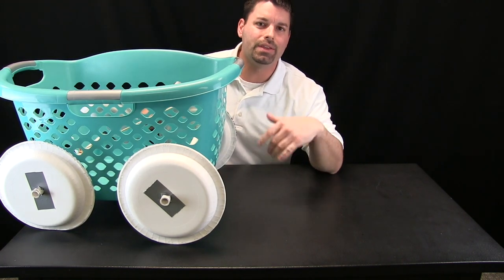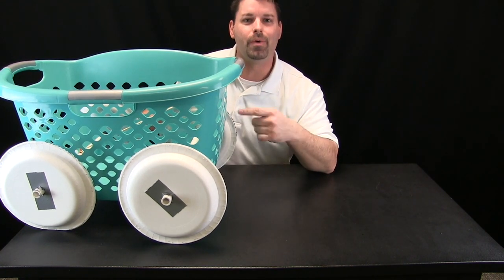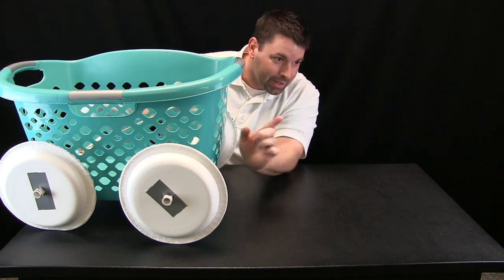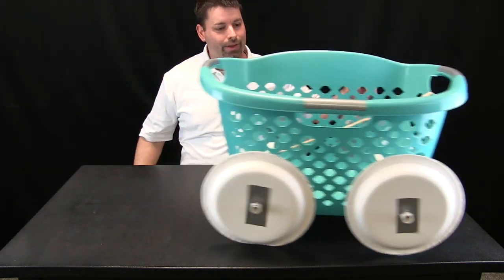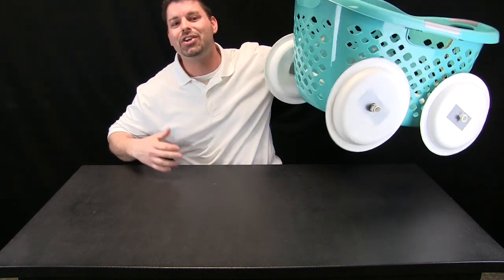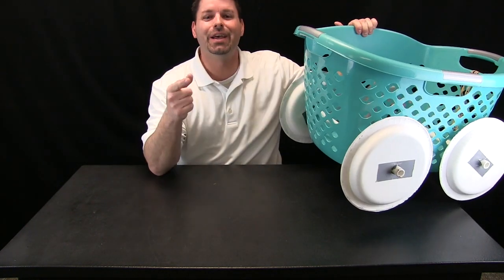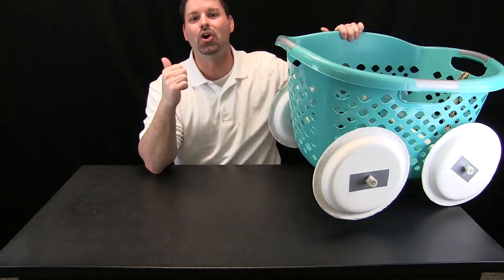So we have tested everything out. The axles seem to spin really well with the rubber bands. We have wound it up. Let us see if we can get it to roll across our table. Here we go. Three, two, one. And she is ready to roll. I say we take her for a test drive out in the hallway.